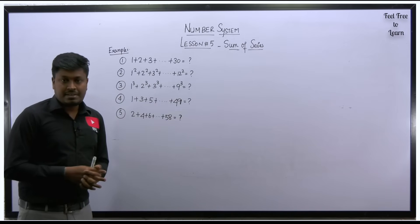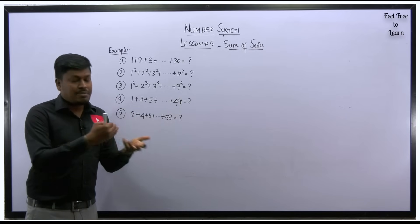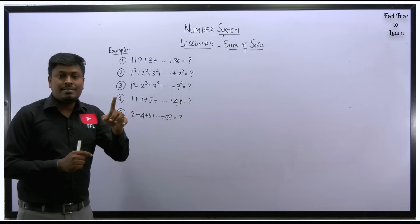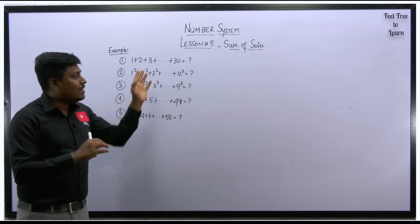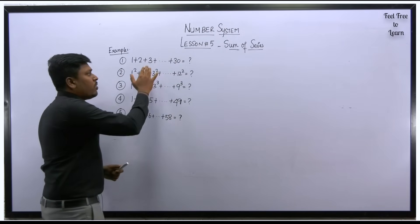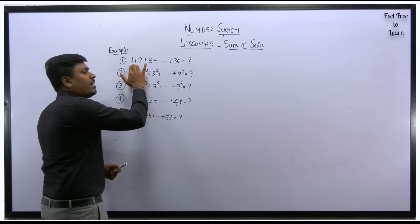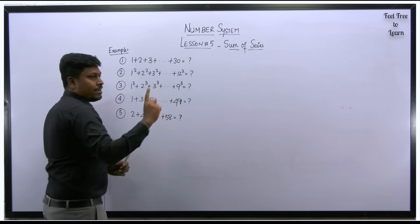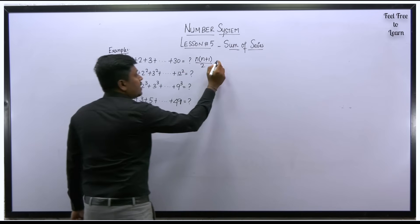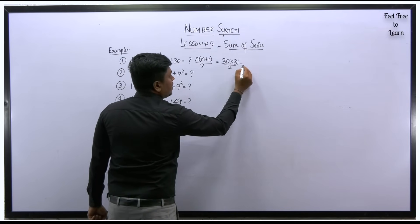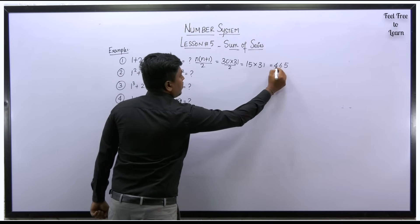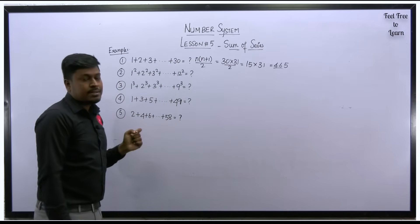Let's solve example questions using the formulas we learned. Always remember: before solving, identify which model and which formula to use. Question 1: 1 plus 2 plus 3 till 30 — it's model 1, category 1. Formula: n into n plus 1 divided by 2, where n equals 30. So 30 into 31 divided by 2 gives 15 into 31 equals 465. So 465 is the sum of series.